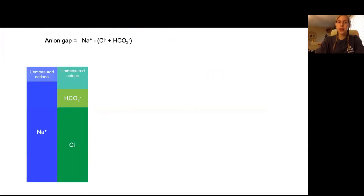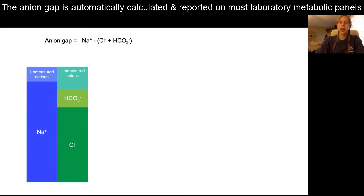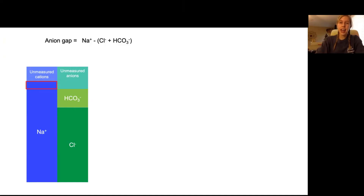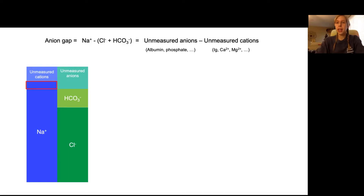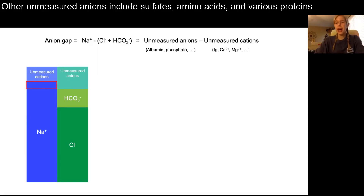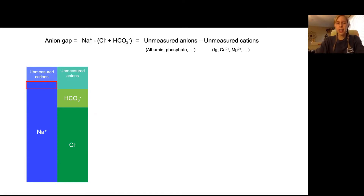Let's talk about the anion gap — sodium minus chloride plus bicarbonate. But what does this actually mean? We use this calculation in clinical practice all the time, but we may not completely understand what it's indicating. This comes down to electroneutrality. The anion gap is actually telling us about the unmeasured anions minus the unmeasured cations. The major unmeasured anions are albumin and phosphate and other organic anions in the blood. The unmeasured cations include immunoglobulin and other metals. What we really care about is sodium minus chloride plus bicarb — that excess amount of sodium — which, because of electroneutrality, tells us about the amount of unmeasured anions.